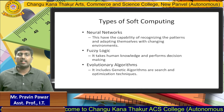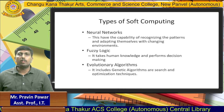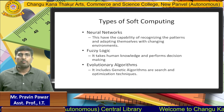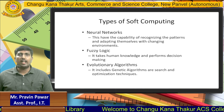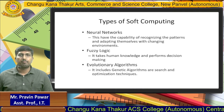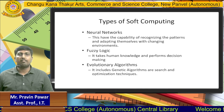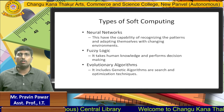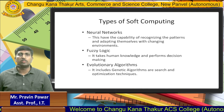The types of soft computing: we have three different types — neural networks, fuzzy logic, and evolutionary algorithms. Neural networks have the capability to recognize patterns and adapt themselves to changing environments. If it takes human knowledge and performs decision making, that is known as fuzzy logic. If it includes genetic algorithms for searching and optimizing techniques, that is known as evolutionary algorithms.